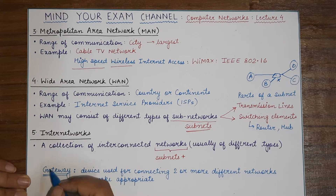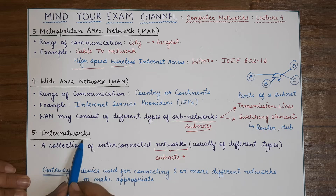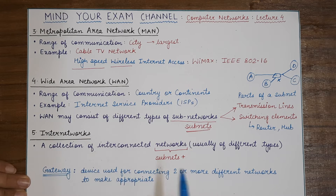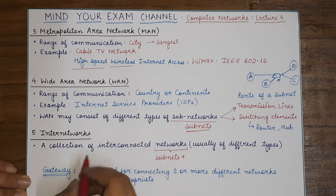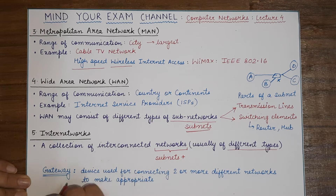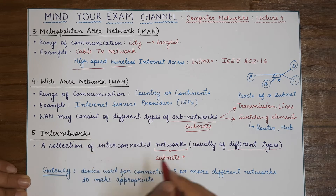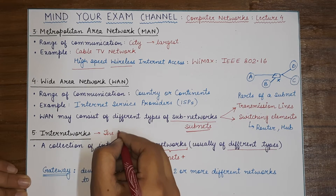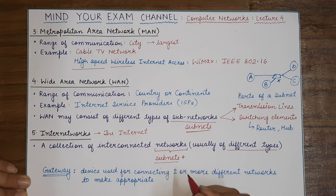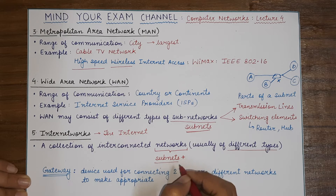Switching elements take decisions about forwarding packets and information crossing them. Now, coming to the last topic: internetworks. The internet is the short form of internetworks. An internetwork is basically a collection of connected networks — a large number of networks, generally of different types, connected so that communication and information exchange between them is possible. The internet, or any internetwork, consists of two main parts — firstly, the subnet.